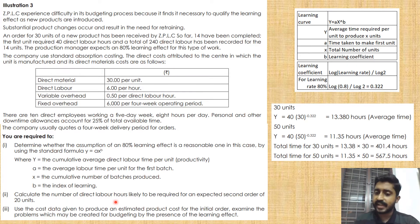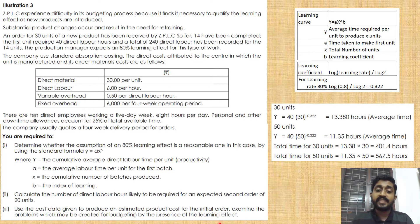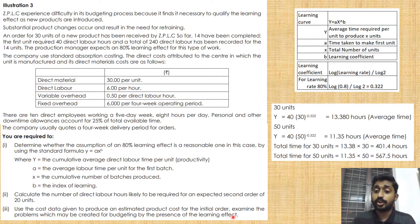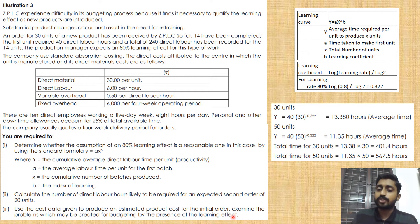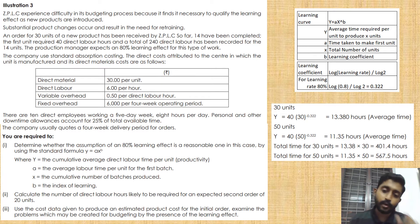Now we use the cost data to produce the estimated product cost for the initial order, and examine the problem created for budgeting in the presence of learning effect. We are costing the first order of 30 units. We already know the total direct labor hours required for 30 units is 401.4 hours.